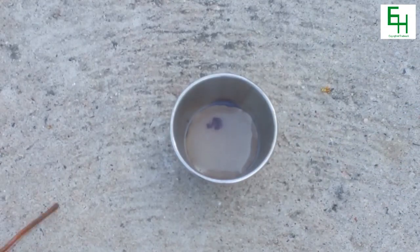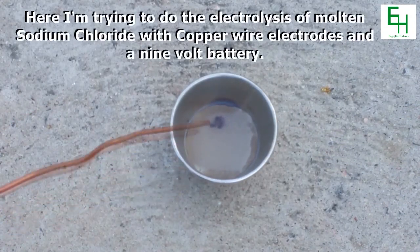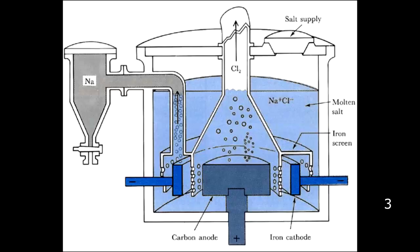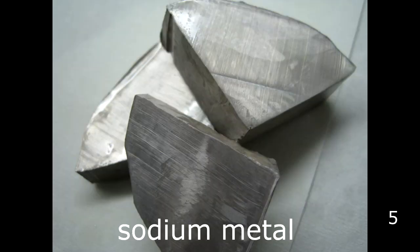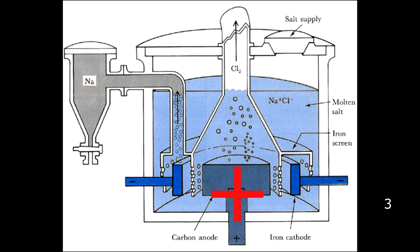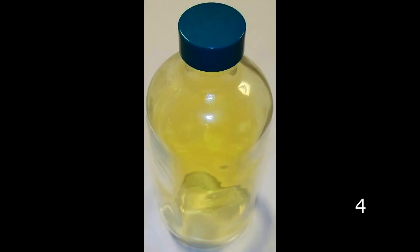Furthermore, besides sodium on the negative electrode, a yellow gas bubbled up on the positive electrode. Here is an illustration of the industrial process used to make sodium and chlorine commercially. On the negative electrode on the left, sodium metal deposits and is kept in a vacuum so it won't corrode. And on the middle, positive electrode, yellow bubbles of chlorine gas are produced.